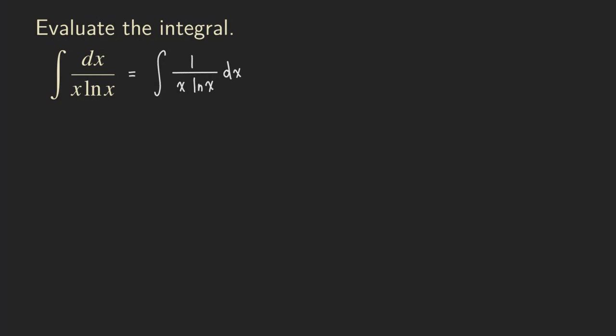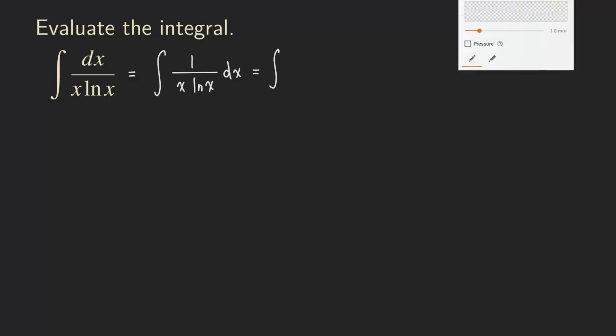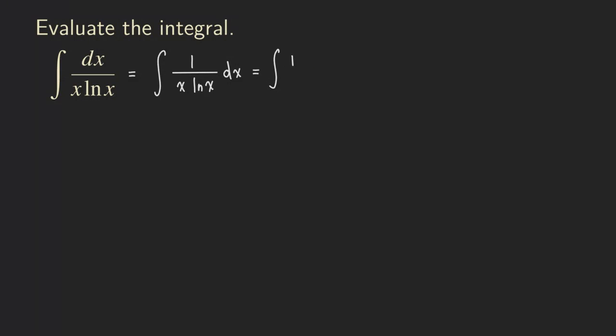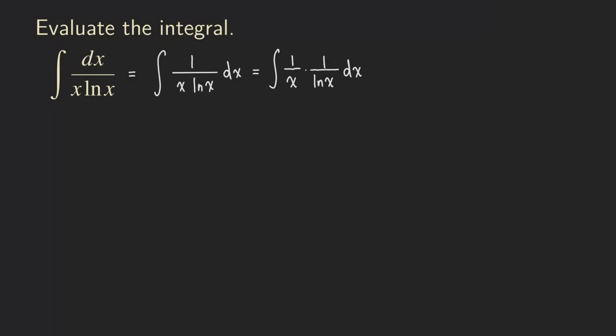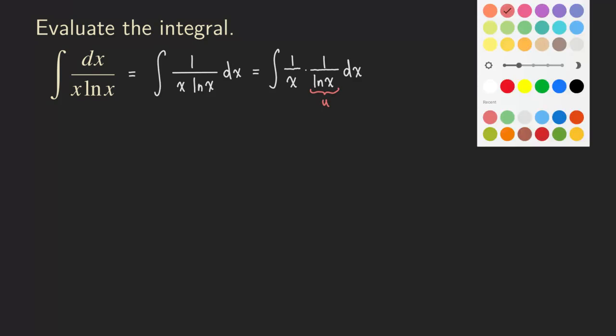And actually you can just rewrite it one more time and write it as a product. So it will be easier if I write it like this: 1 over x times 1 over ln of x and then the dx. So I'm going to let u be this thing here.